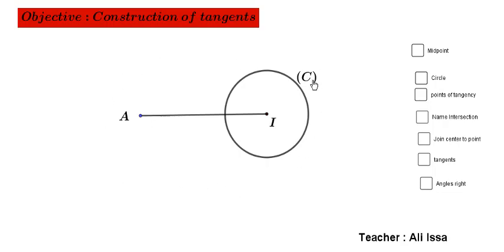This construction is done by many steps. Let's start by step number 1. Determine the midpoint of the line segment A-I. Step number 2.